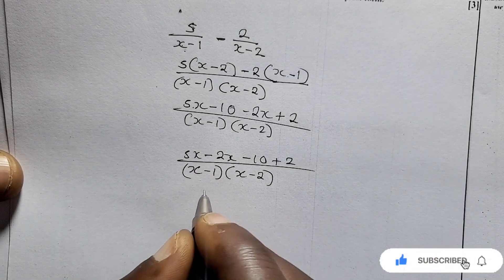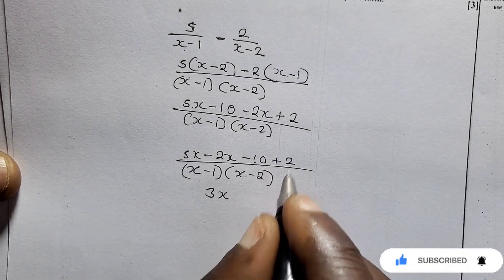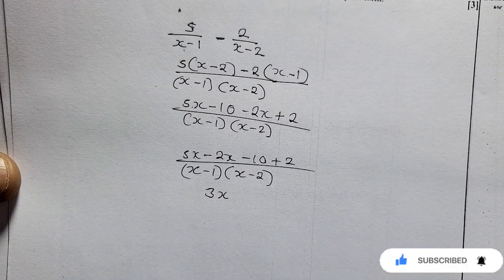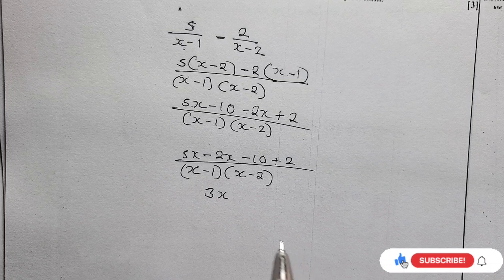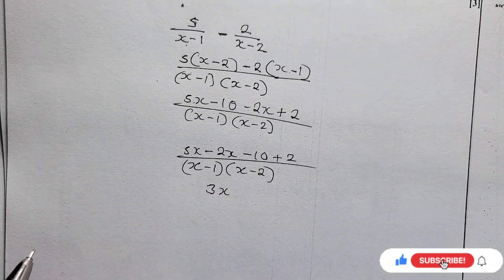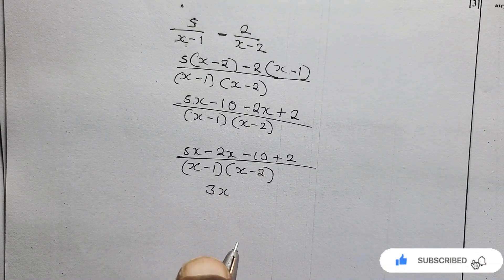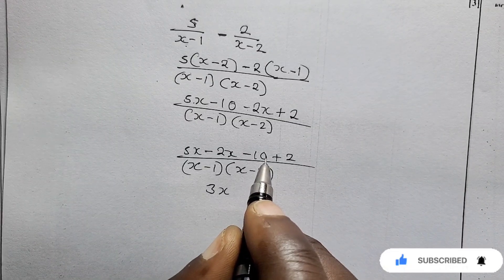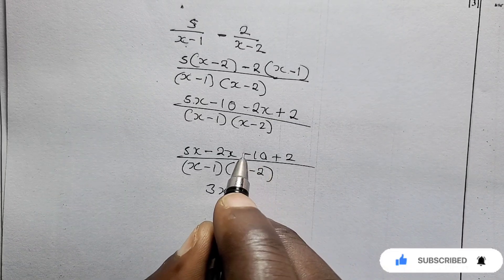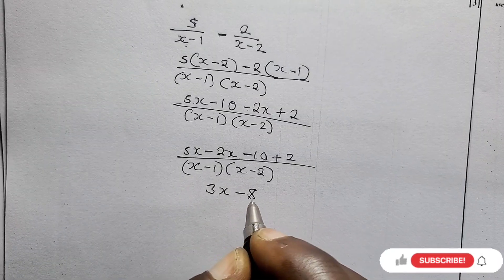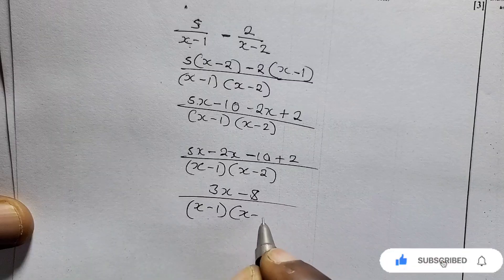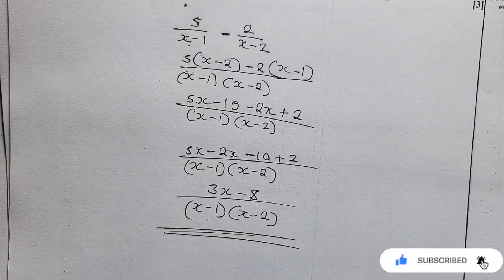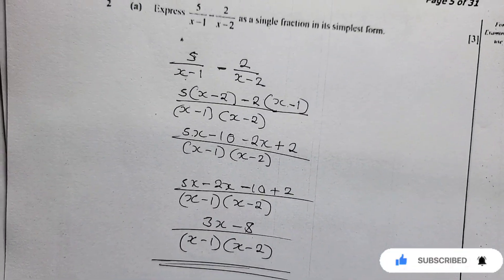So we have 3x. For the constants, negative 10 plus 2: subtract and take the sign from the bigger number — 10 minus 2 is 8, and the sign from the bigger number is negative, so it is negative 8. The final answer to Question 2a is (3x minus 8) over (x minus 1)(x minus 2).